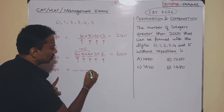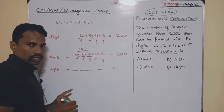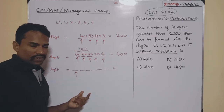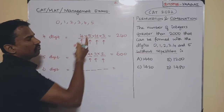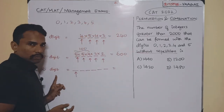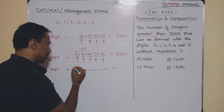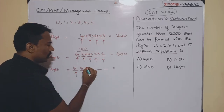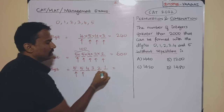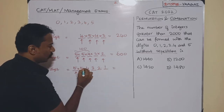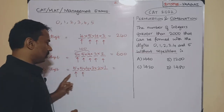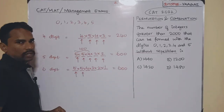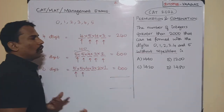For six-digit numbers: put six slots. Again the first digit must be non-zero, giving 5 ways. The remaining slots are filled with 5, 4, 3, 2, and 1 ways respectively. Total six-digit numbers = 5 × 5 × 4 × 3 × 2 × 1 = 600.